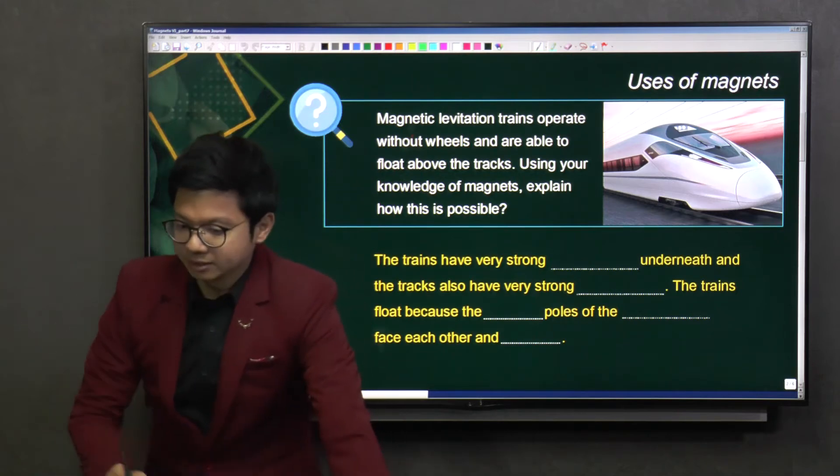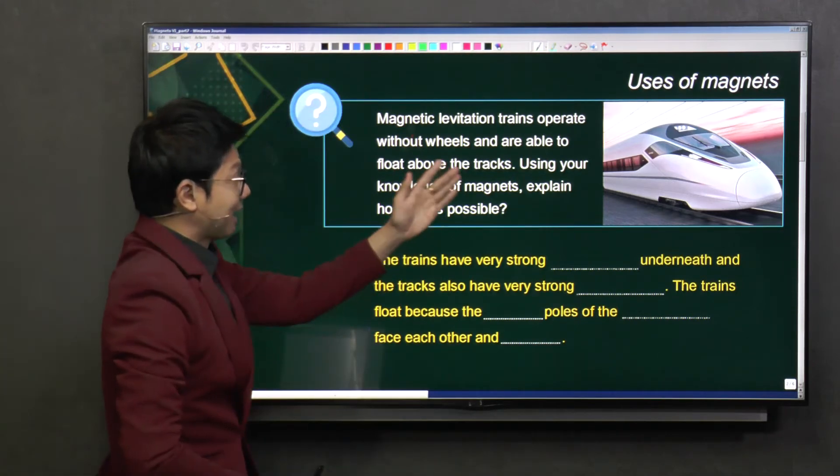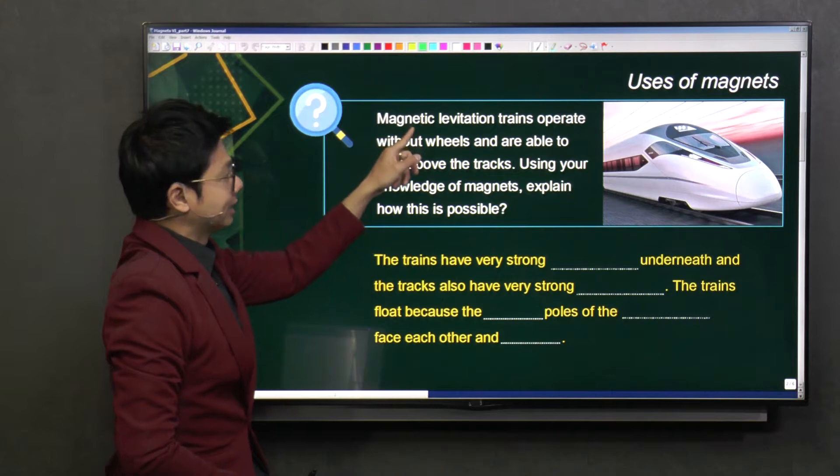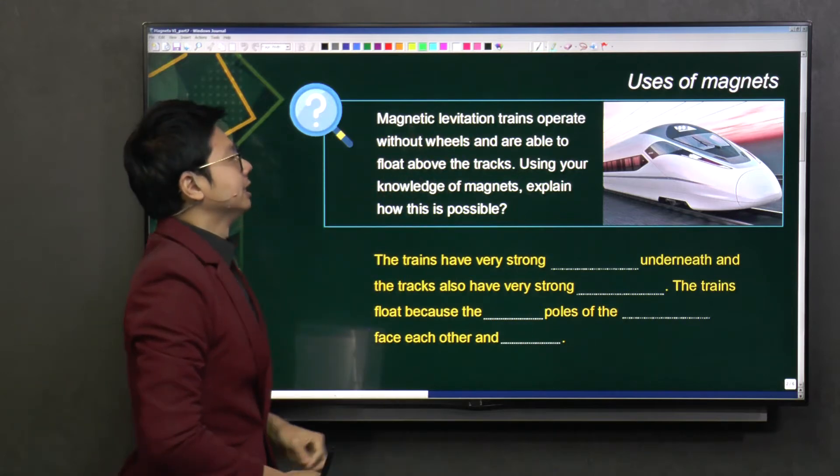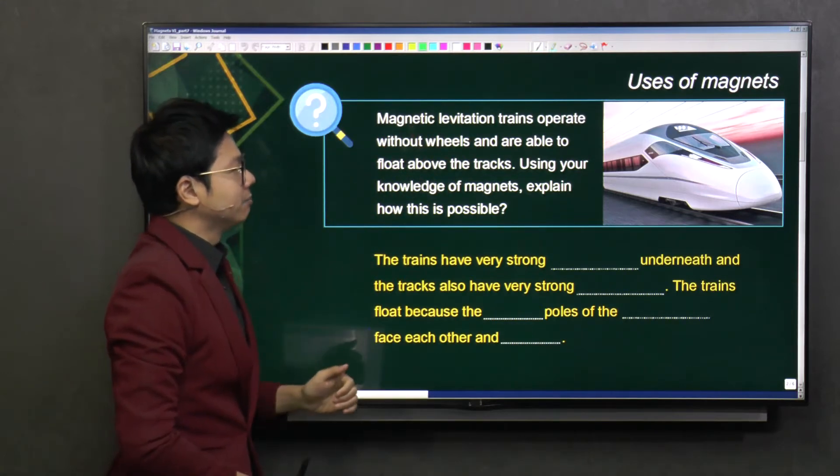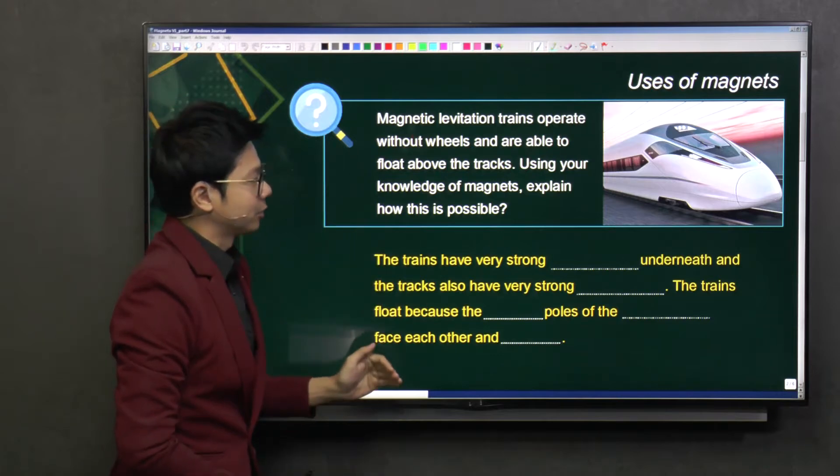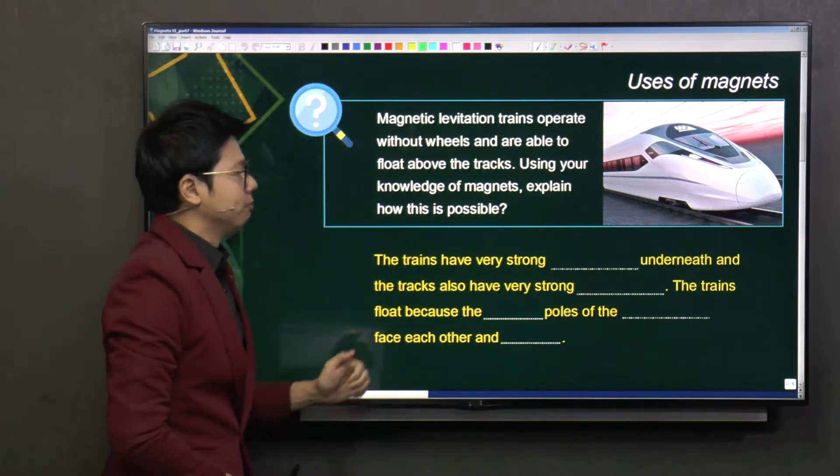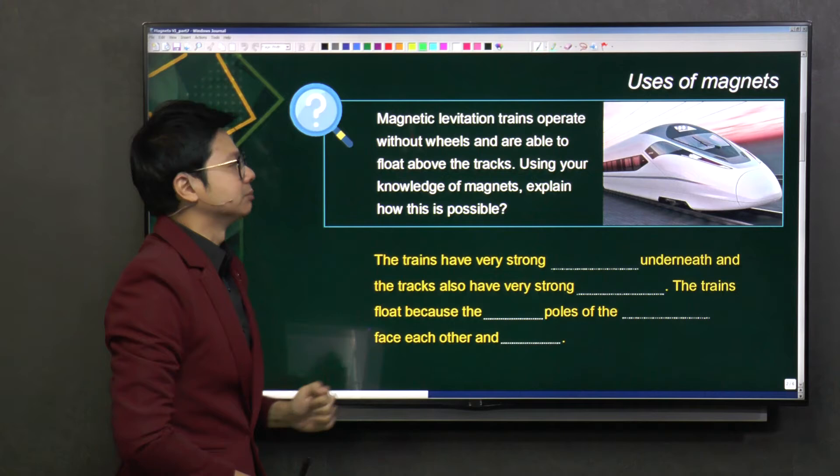There is this thing that is very amazing. It's called the Maglev train. In fact, it's called the Magnetic Levitation train. They operate without wheels and are able to float above the tracks. Using your knowledge of magnets, explain how this is possible.